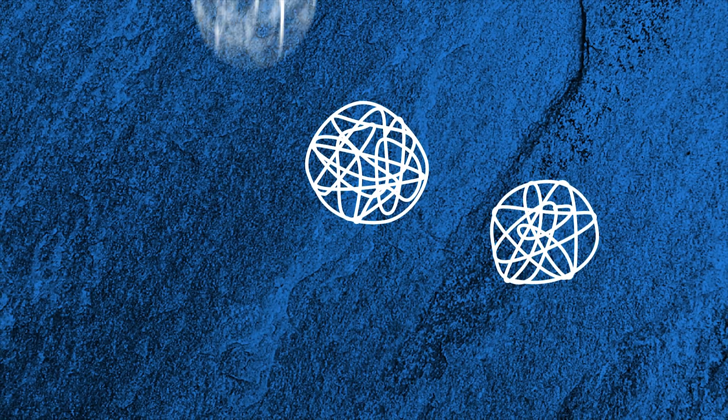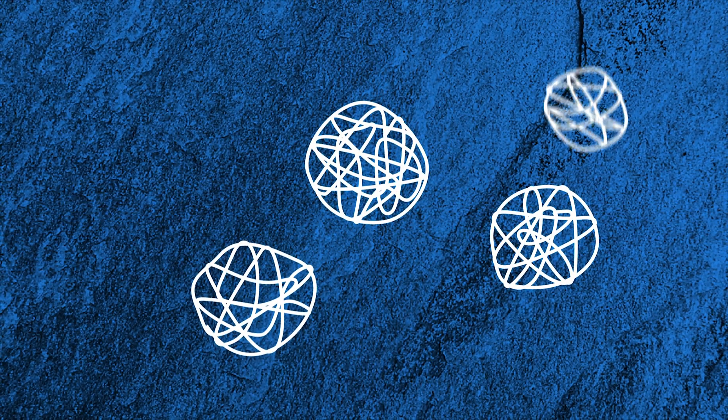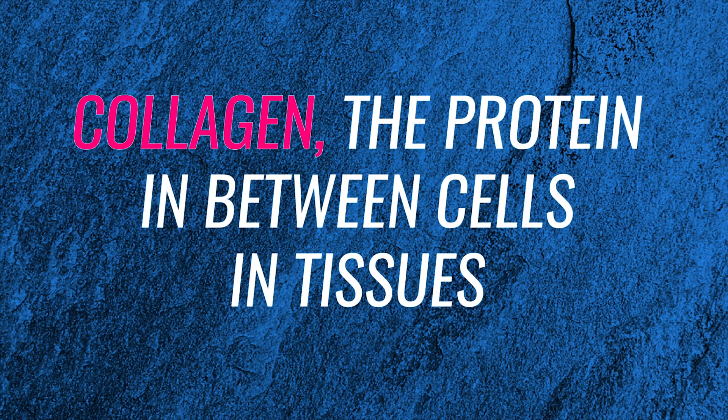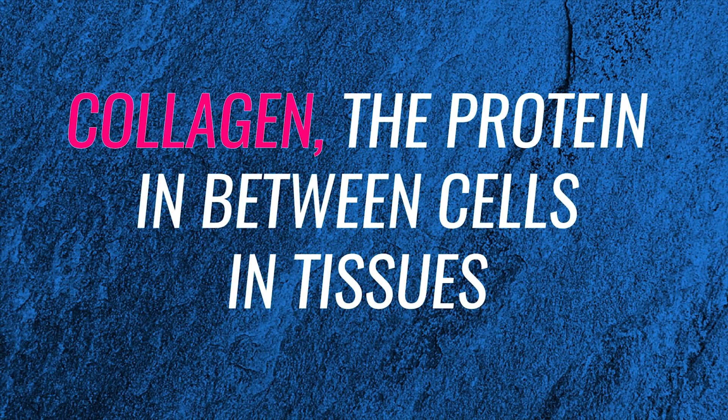One method that's looking promising for growing muscle cells in an industrial scale is to use small beads as the framework for the cells to grow on. The beads can be made of starch, that is carbohydrates, or collagen, the protein in between cells in tissues or other similar materials.